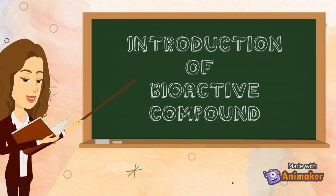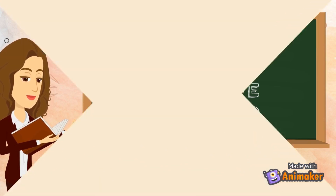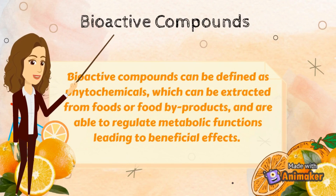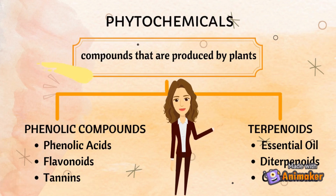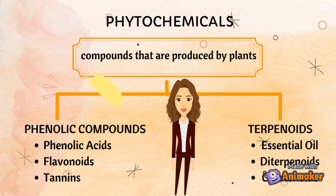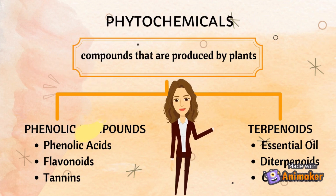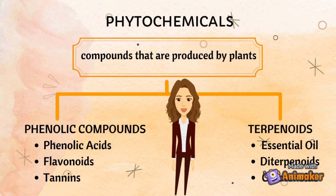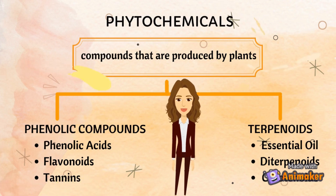Hello everyone, have you heard the term of bioactive compounds? If yes, what is a bioactive compound? Bioactive compounds can be defined as phytochemicals which can be extracted from foods or food byproducts and are able to regulate metabolic functions leading to beneficial effects. So what is actually phytochemicals? Phytochemicals are compounds that are produced by plants. They are classified into two categories: phenolic compounds and terpenoids.